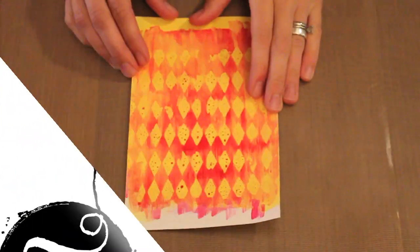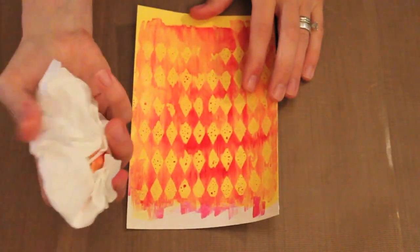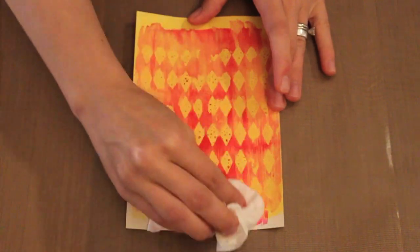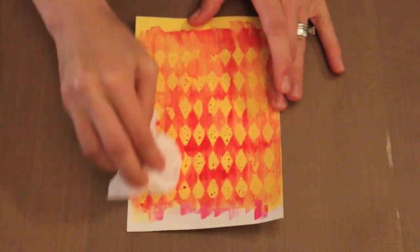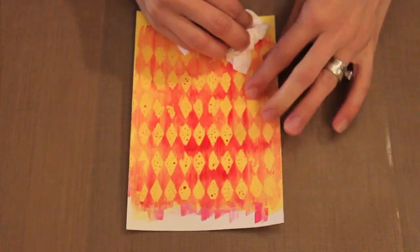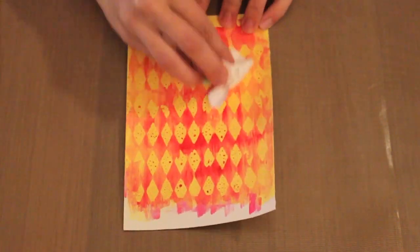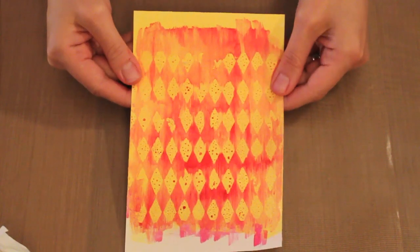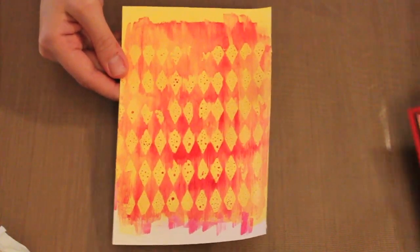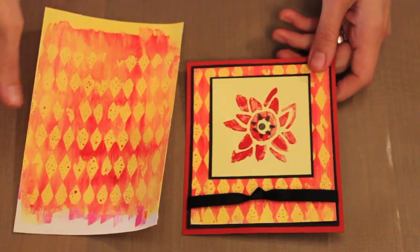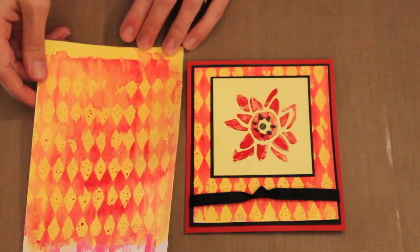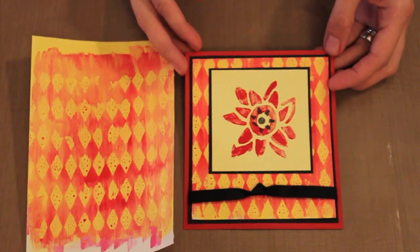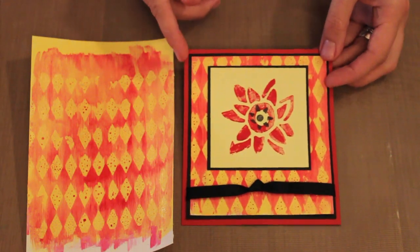Now this is dry, I'm going to take a dry tissue and just blot off or rub off any of the excess watermark, get rid of any of that sticky residue. Then I've got a background that is ready to be used. You can see that I just simply trimmed off the excess pieces here and then matted this onto a black cardstock before putting it onto my card front.